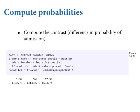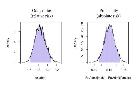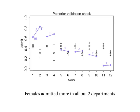The median contrast is about 0.14 — what we got before — and definitely positive: we don't get anywhere close to zero. Lots of evidence that on average across all departments, males are getting admitted more. The odds ratio on the left is the relative risk; the probability contrast on the right is the absolute scale. This is relative shark on the left and absolute penguin on the right.